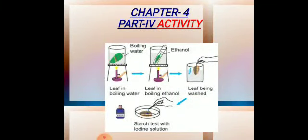Good morning, Class 7 children. In my last video I explained activity number one, two, and three based on the photosynthesis process — a few experiments. The main process in all the experiments was the starch test, or iodine test, which contains four steps: first, boil the leaf in water; second, boil in ethanol; third, wash with hot water; and fourth, the starch test with iodine solution. Remember, all four steps are very important.